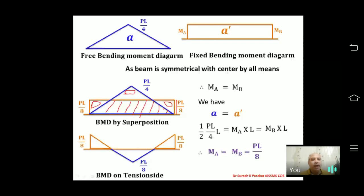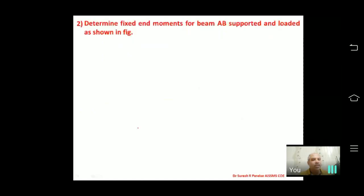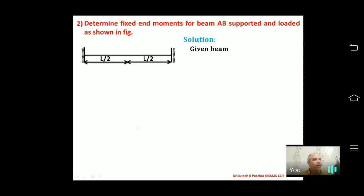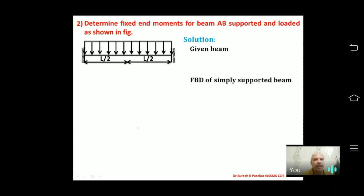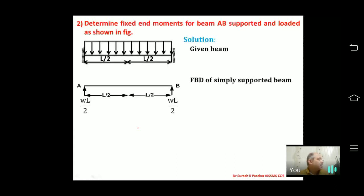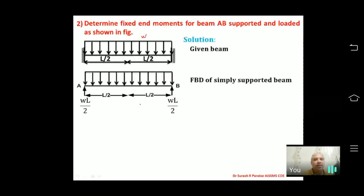Second problem: determine fixed end moments for a fixed beam with UDL of intensity w throughout the span. The simply supported reactions are wL/2 on each side. The free bending moment diagram is parabolic with a maximum value of wL²/8 at center.